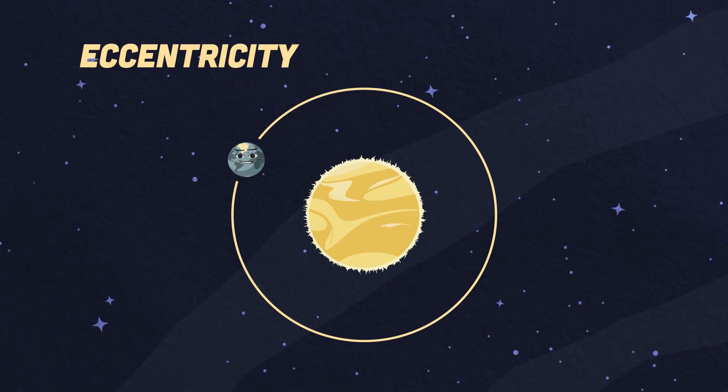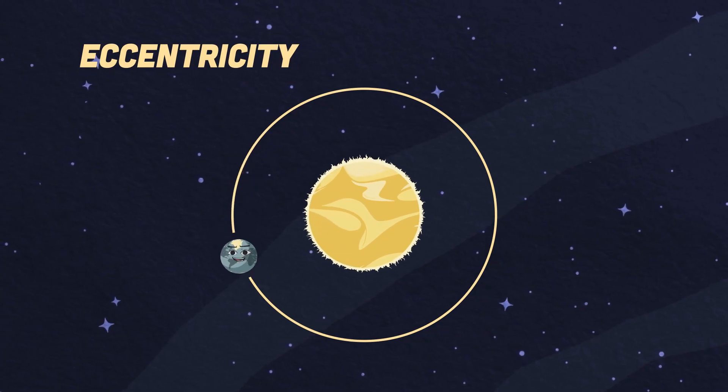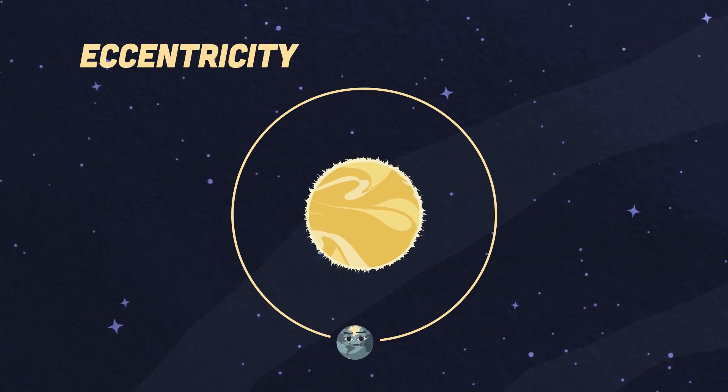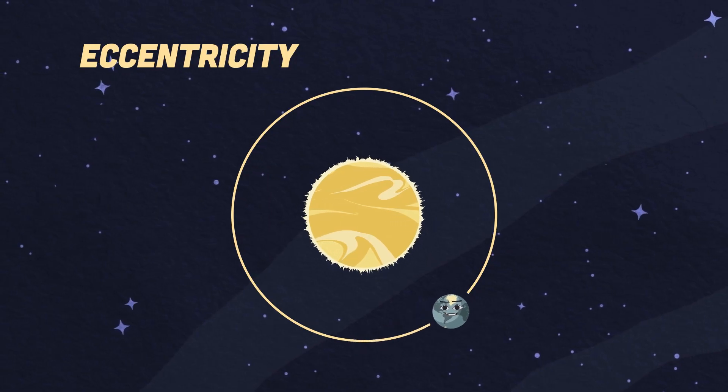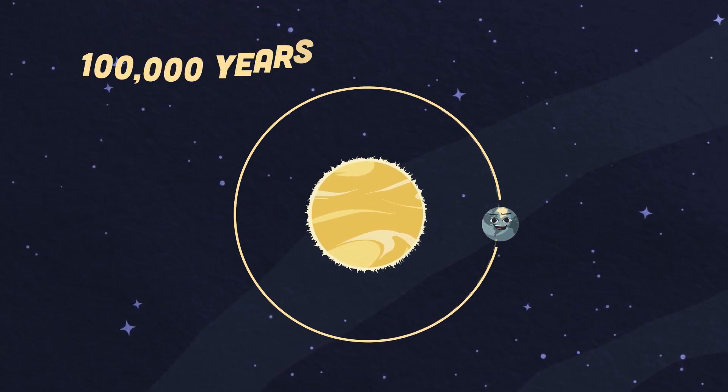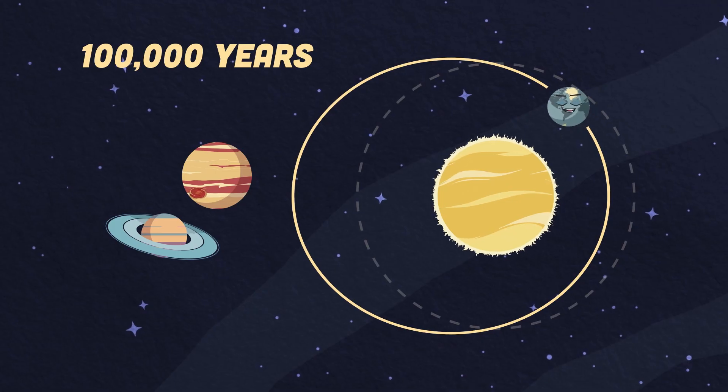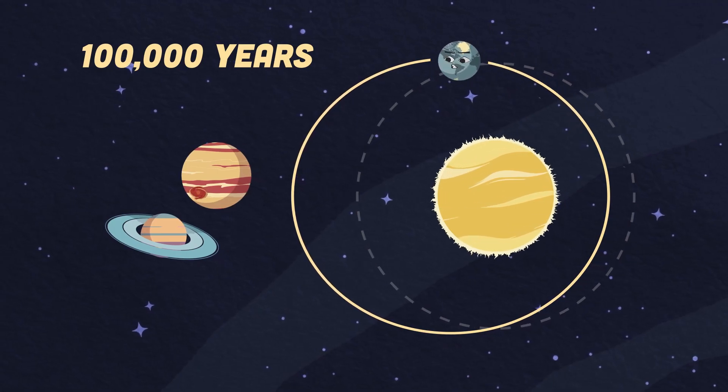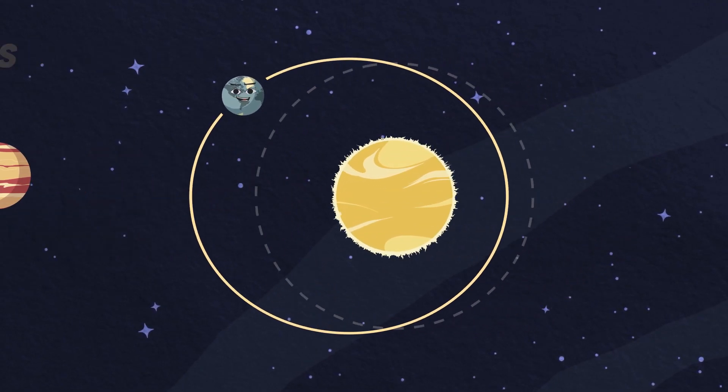The first cycle is called eccentricity, which has to do with the shape of Earth's orbit over time. Every 100,000 years, the Earth's orbital path changes due to the pull of gravity from Jupiter and Saturn.